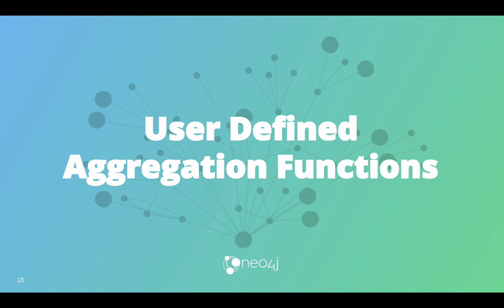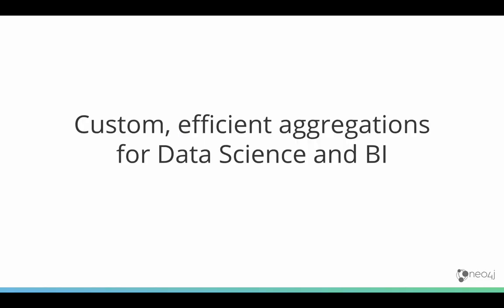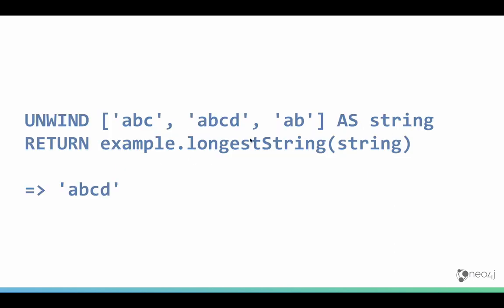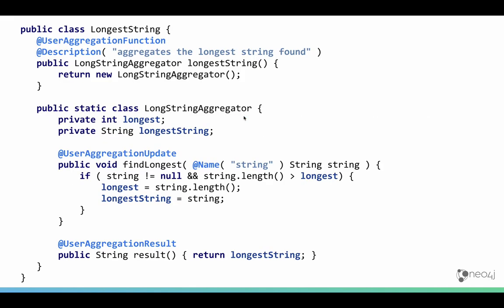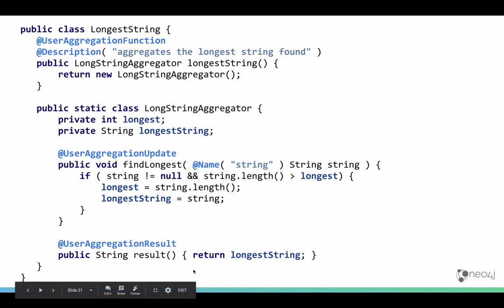For aggregation functions, it's a little more involved because they have to keep state — they aggregate data in some data structure. Here's an example that computes the longest string from a list. Internally it creates an instance of an aggregator that keeps the longest string and its length, and for each row it gets an update call, computes the result, and at the end returns the result.